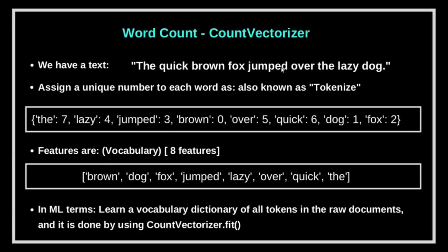Assigning a unique value to each word is done by the `fit` method, which is part of the Count Vectorizer class. Counting the number of times that number appears is done by the `transform` method. For example, take the sentence 'the quick brown fox jumped over the lazy dog'. We tokenize it by giving a unique number to each word. The word 'the' repeats twice but gets only one unique number — 7. 'Lazy' is 4, 'jumped' is 3, and so on. There are a total of 8 features.